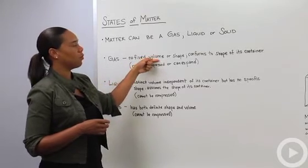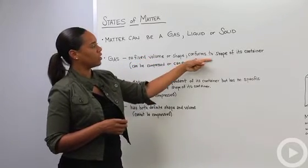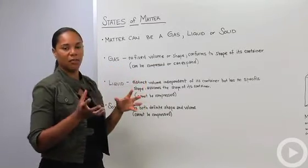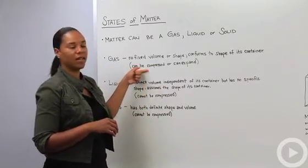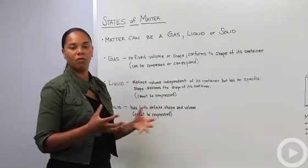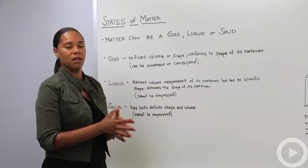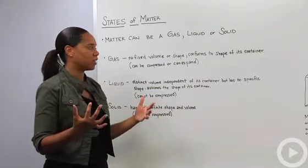A gas has no fixed volume or shape and it conforms to the shape of its container. We can also think of gas as a vapor. It can be compressed or it can expand depending on what the volume size is. In a smaller container it can be compressed; if the container is larger, then it will expand.